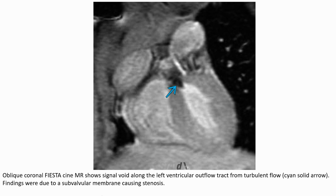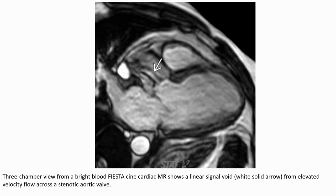Coronal oblique MRI also shows a signal void along the left ventricular outflow tract from turbulent flow, with findings due to a sub-valvular membrane causing stenosis. The three-chamber view from phase-contrast MRI shows a linear signal void from elevated velocity flow across a stenotic aortic valve. The cross-sectional view through the aortic valve from phase-contrast MRI is also demonstrated.